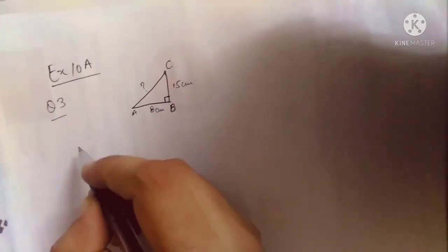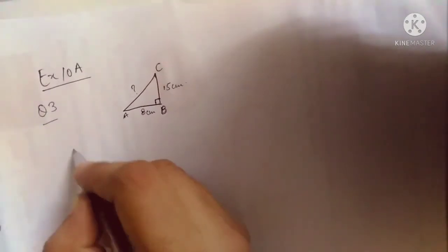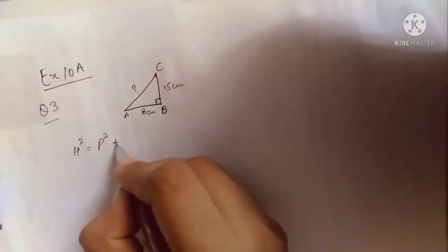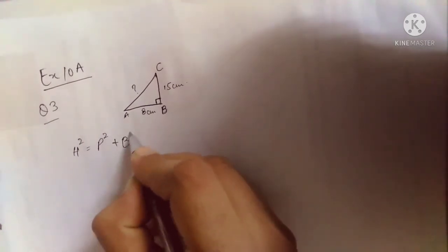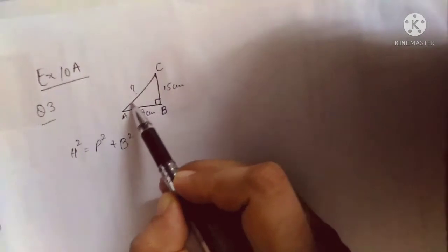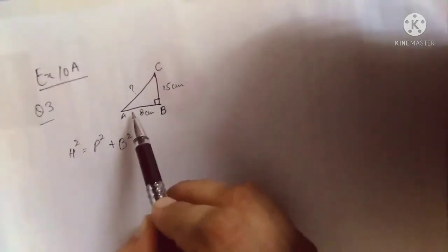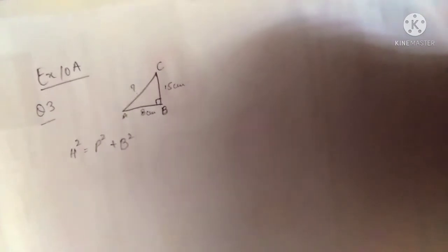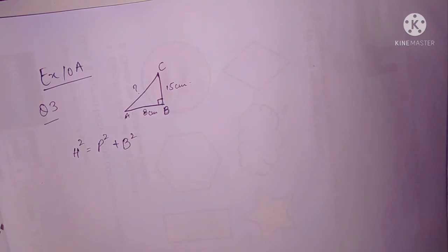We are going to use the Pythagorean theorem, which is: hypotenuse squared is equal to perpendicular squared plus base squared. Remember that in a right angle triangle, this is always your hypotenuse, this is your base, and this is your perpendicular.